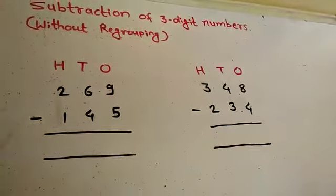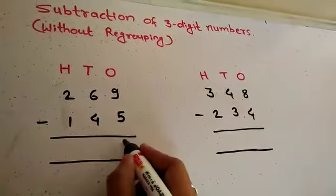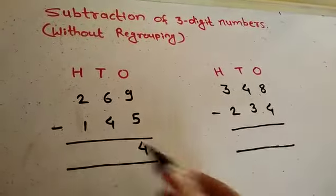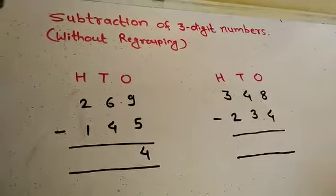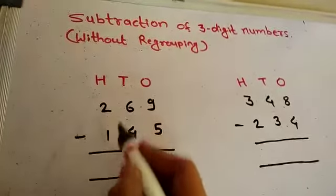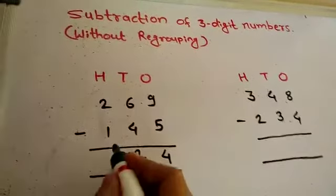9 minus 5 equals 4. Now the tens: 6 minus 4 equals 2. Now the hundreds: 2 minus 1 equals 1.